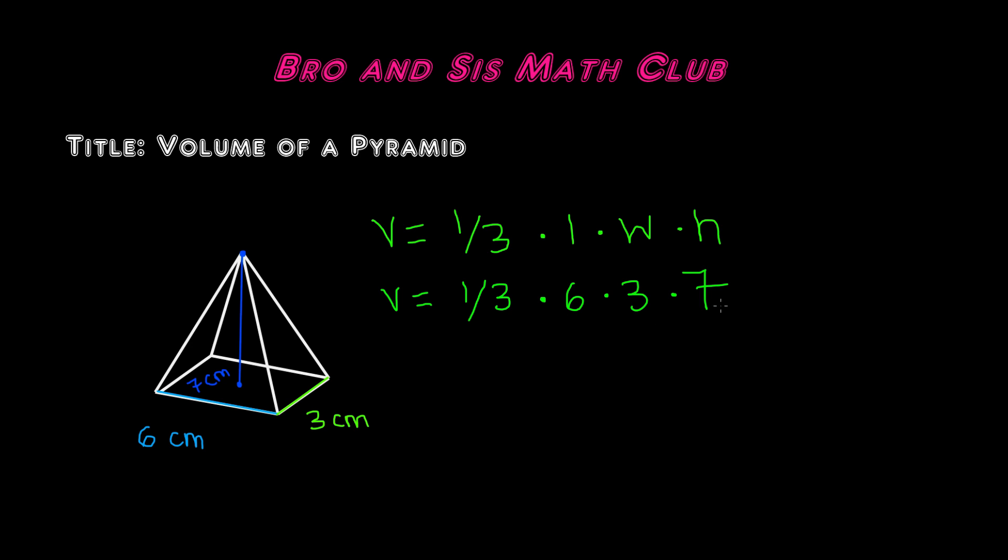First let's multiply the length, width, and height, and then we'll multiply it by one-thirds to find our final answer. So we have to multiply 6 times 3, which is 18, times 7, which gives us 126. So we have volume equals one-thirds times 126.